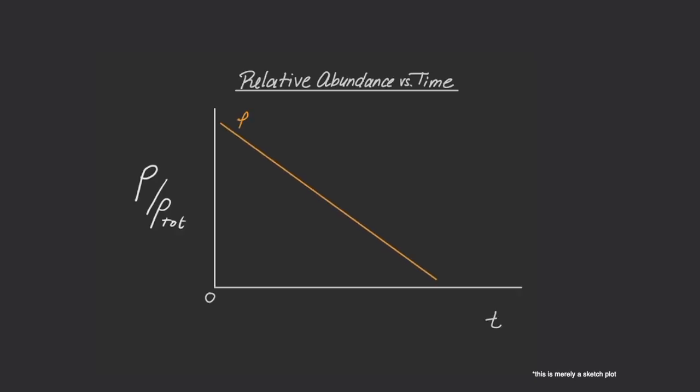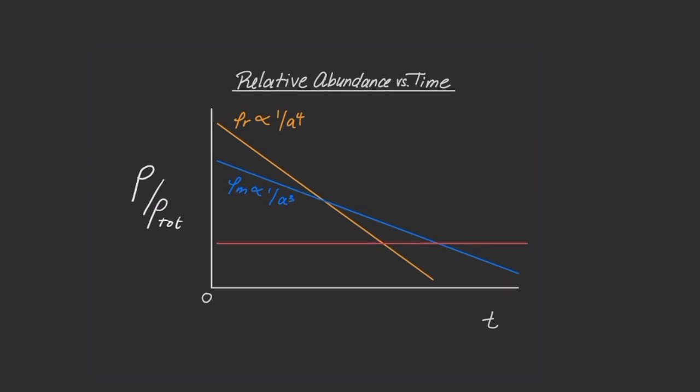But things get even more interesting. Since we know how each type of matter dilutes as the universe expands, we can make a plot of what type of matter dominates the universe at any given time. From this plot of relative abundances, we see that at early times radiation dominates. Matter dominates at slightly later times. But since dark energy never dilutes, it will dominate the energy density of our universe until the end of time. And so, where are we along this cosmic timeline? We're here, when remember, dark energy dominates our energy budget, but not by much.